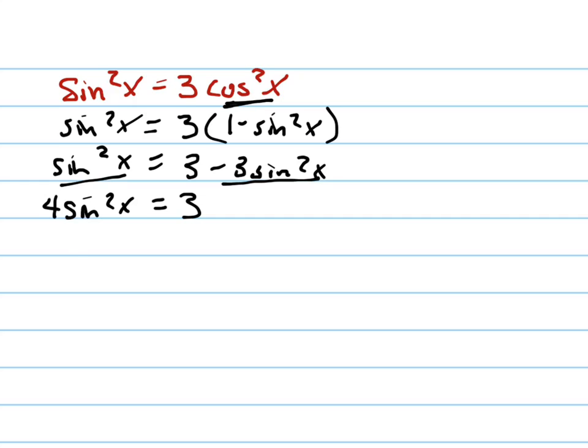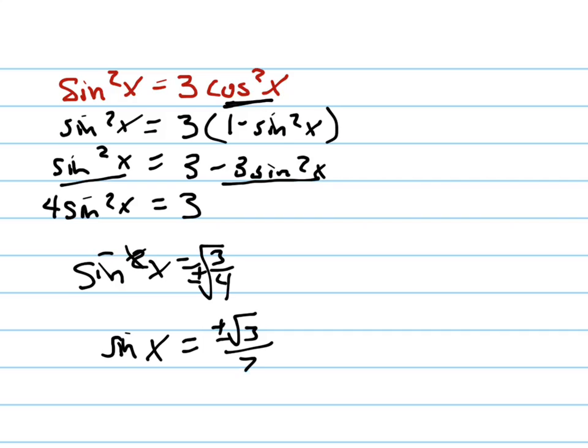Now I can divide both sides by 4. So I get sine squared x equals 3 fourths, which is nice because now I'm going to take the square root of both sides to get rid of that squared. And don't forget the plus or minus square root. So sine of x equals plus or minus the square root of 3 all over 2, which is on our unit circle.